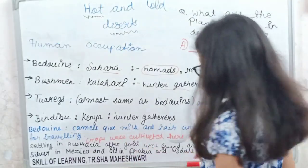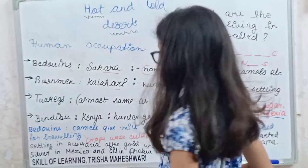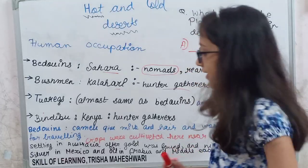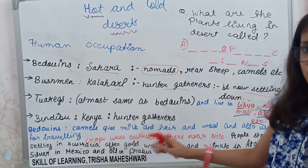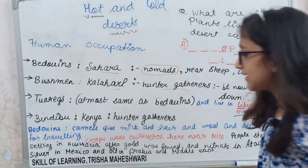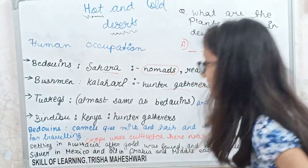Vindibu — they are in Kenya and they are hunter-gatherers. These small details are important notes to remember.